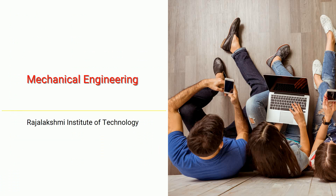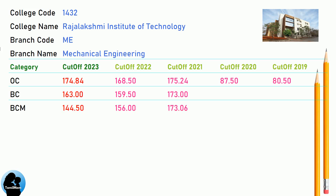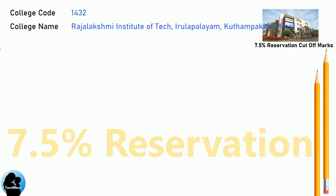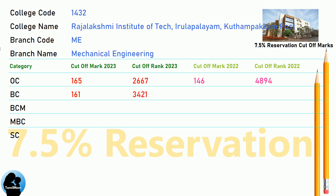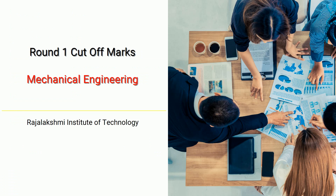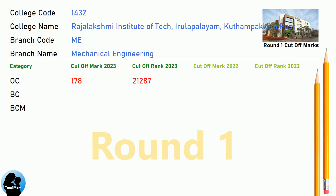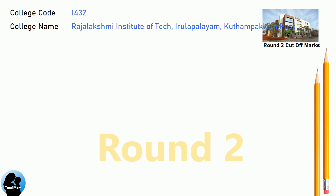DNA Cut-Off for Rajalakshmi Institute of Technology in Mechanical Engineering. DNA 7.5 Reservation Cut-Off, DNA Round 1 Cut-Off, and DNA Round 2 Cut-Off for Rajalakshmi Institute of Technology in Mechanical Engineering.